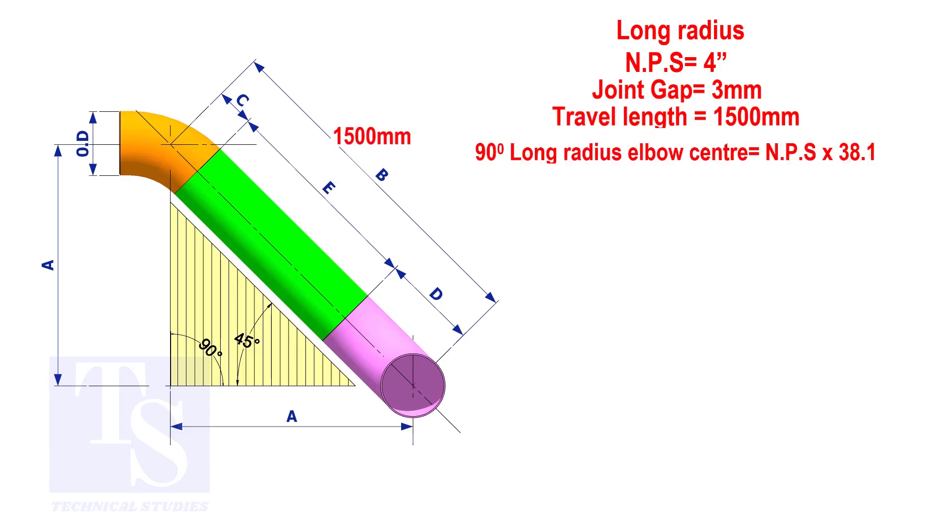The elbow center is the nominal pipe size multiplied by 38.1. So the elbow center of the 90 degree elbow is 152.4 millimeters.